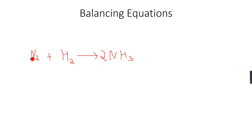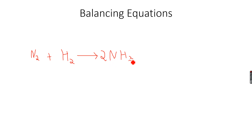If I place a coefficient of 2 in front of ammonia, then the N2 and 2NH3 balance because on both sides I have two nitrogen atoms. But then I have a problem with hydrogen.